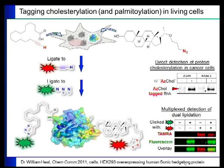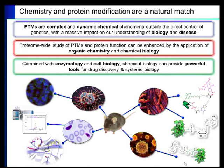That's an example of the way in which we can use these tools to understand complex biological and biochemical mechanisms inside living cells. The view of our lab, and many others around the world, is that chemistry and protein modification are really a natural match, because PTMs are complex and dynamic chemical phenomena outside the direct control of genetics. A proteome-wide study of PTMs and protein function can really be enhanced by applying an understanding of the chemistry and biochemistry, and the ability to make new probes by synthetic chemistry. In combination with enzymology and cell biology, it can provide powerful tools for drug discovery and ultimately systems biology — modelling how these modifications evolve in responses to disease, drug treatment, and so on.